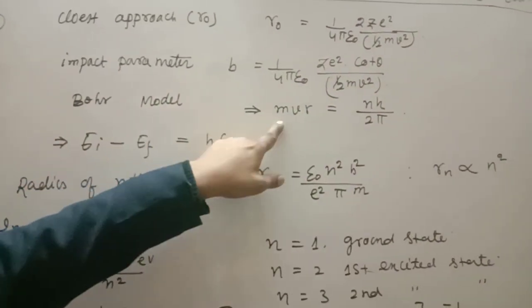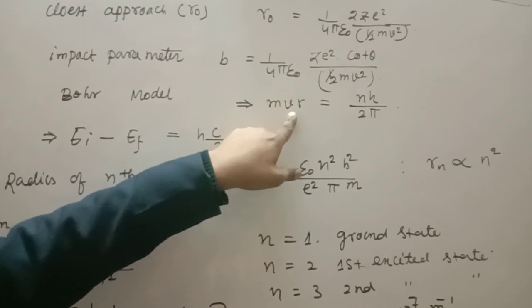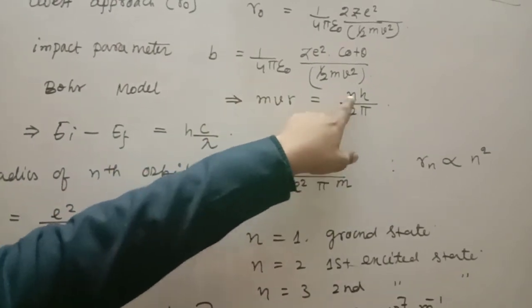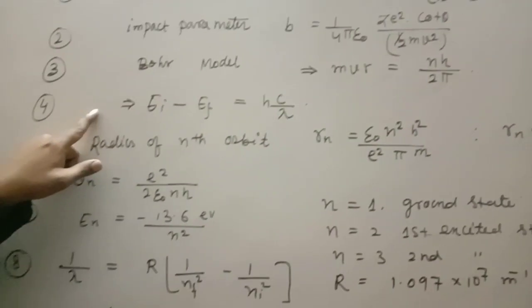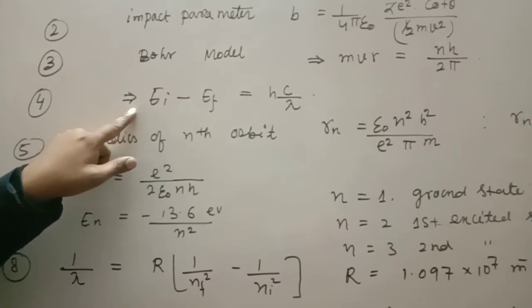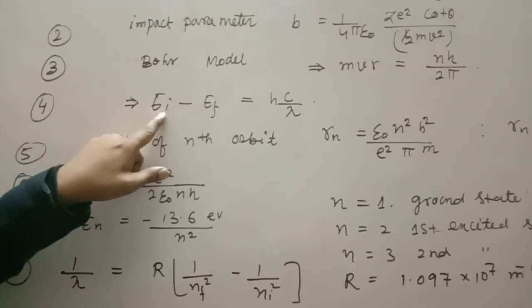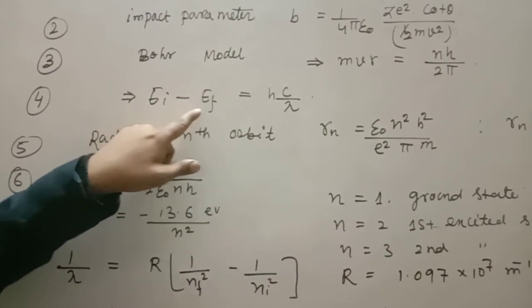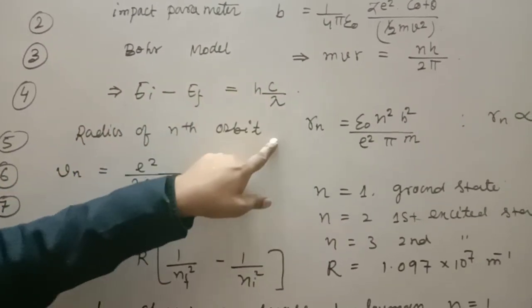Bohr model's important postulates: angular momentum mvr is equal to nH by 2π. And another, when electrons transit from higher energy level to lower energy level, E minus Ef is equal to hc by lambda.